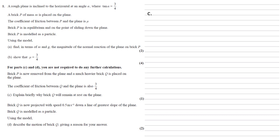For part c, we need to explain briefly why brick q will remain at rest on the plane. So let's refer back to our diagram again. So I've replaced r with the four fifths mg that we calculated. I've replaced the friction force with the three fifths mg that we've also calculated.